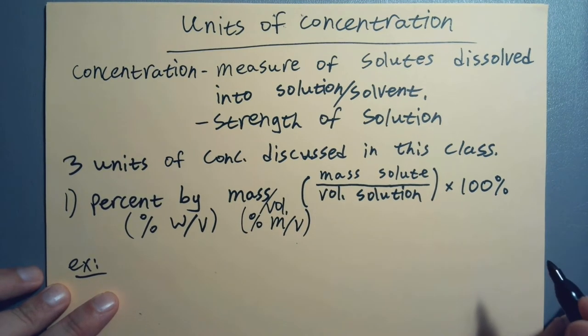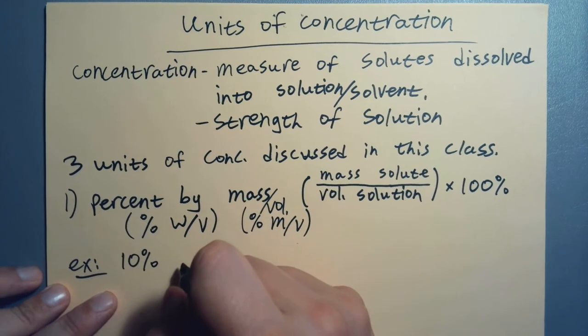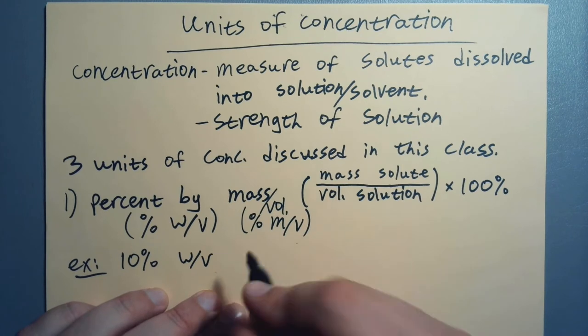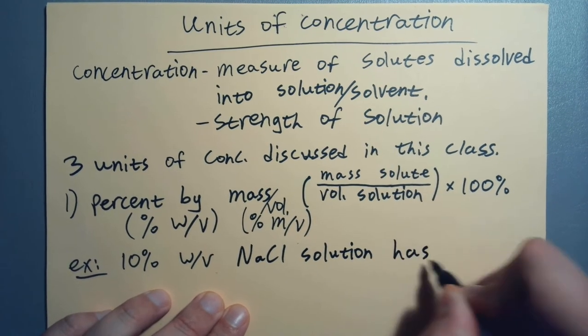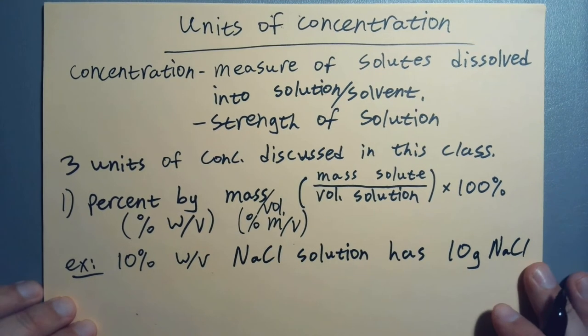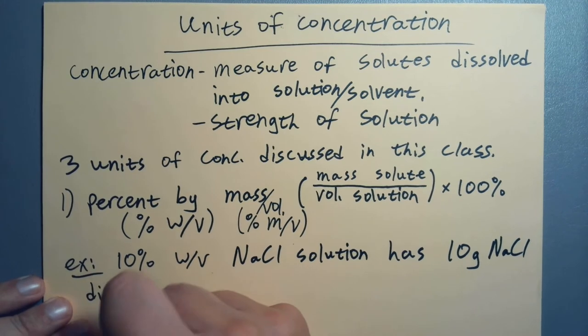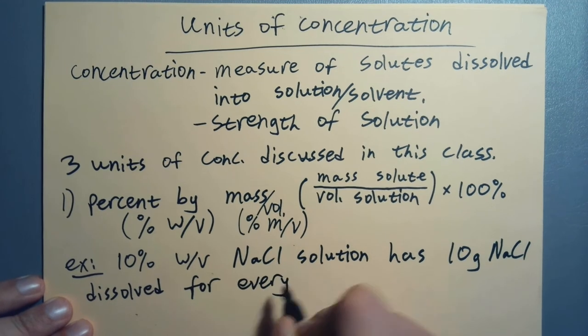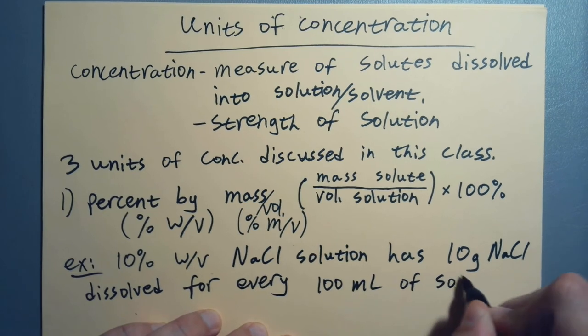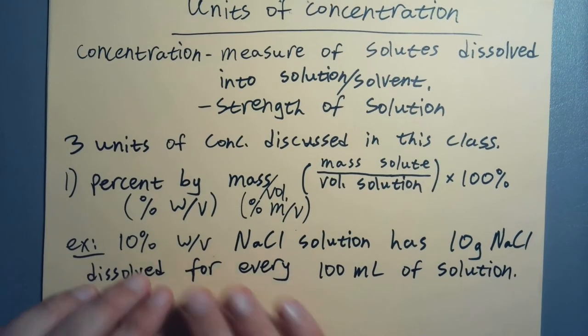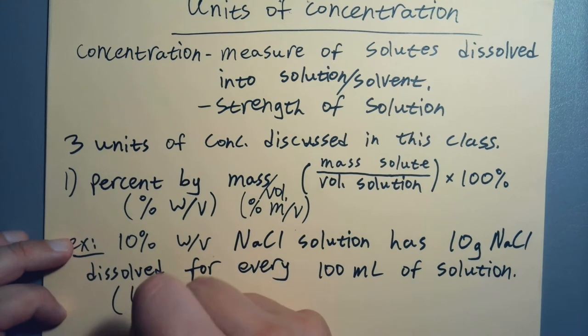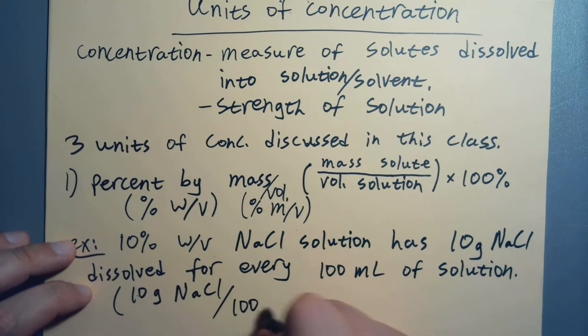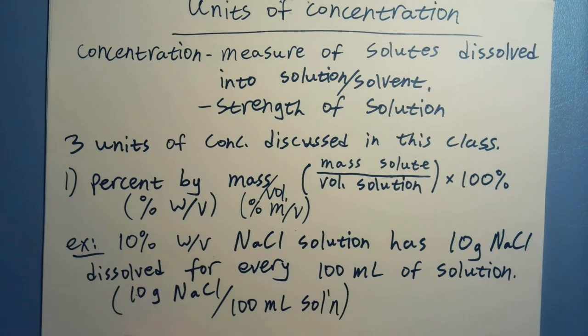So here's an example of how we calculate it. As an example, if we have a 10% weight to volume in a NaCl solution, what we're saying is that this has 10 grams of NaCl, sodium chloride, dissolved for every 100 milliliters of solution. That can give us a conversion factor to work with later.